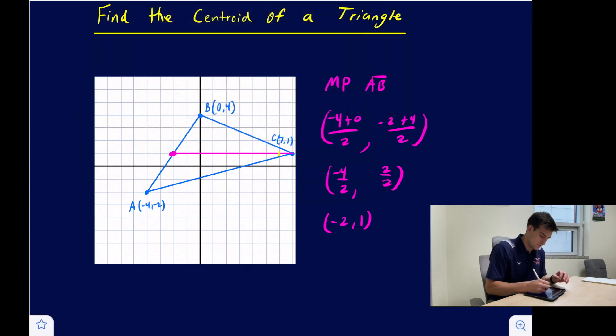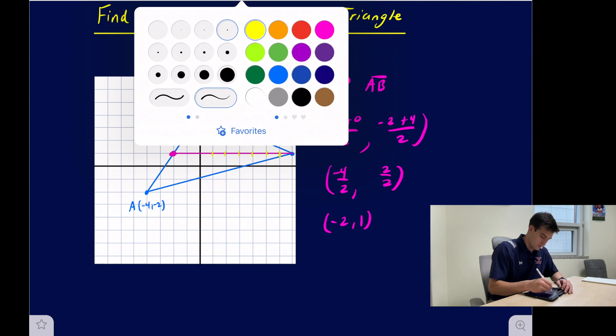If my distance is one, two, three, four, five, six, seven, eight, nine, so two-thirds of the way would be six units, right? So we're going to start at vertex C and we're going to go one, two, three, four, five, six units and we're going to place our midpoint right there.